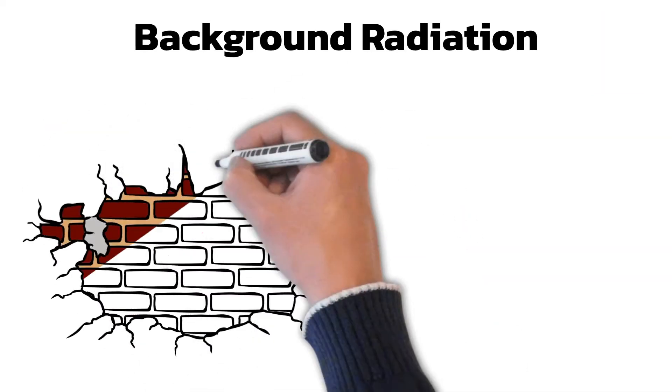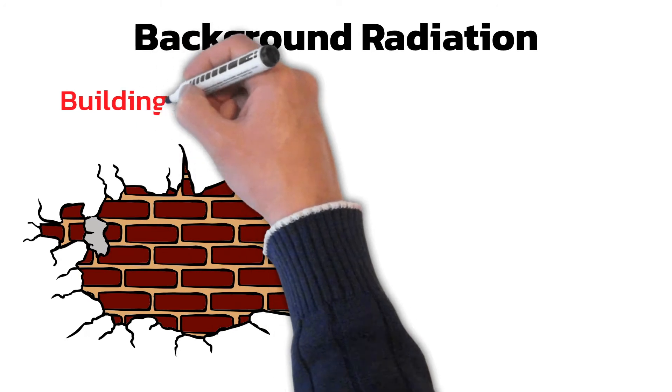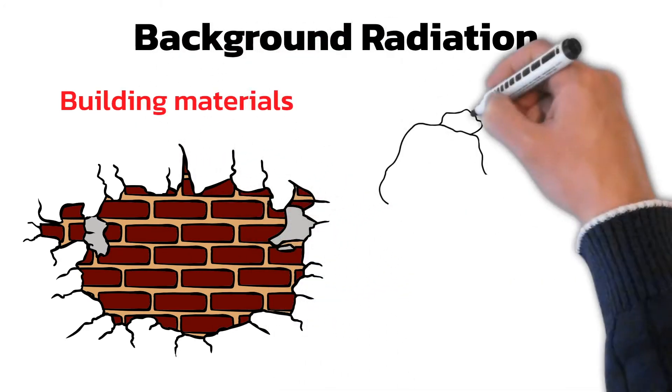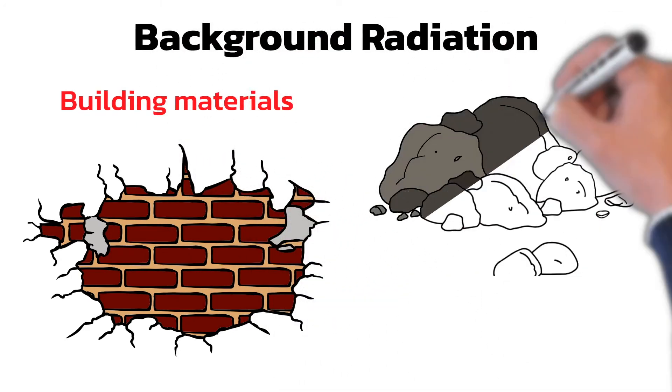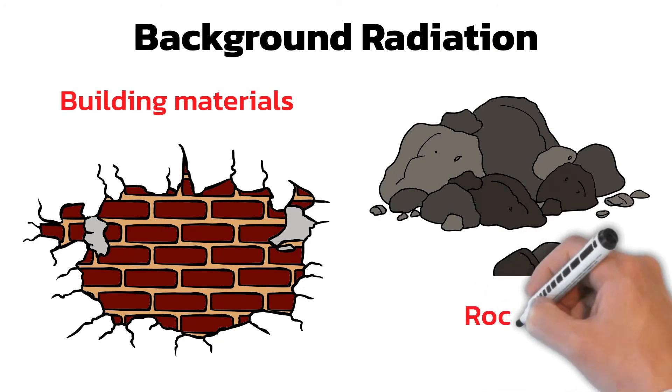There are naturally occurring radioactive isotopes in the materials we use for building and in rocks from underground. This makes up about 15% of background radiation.